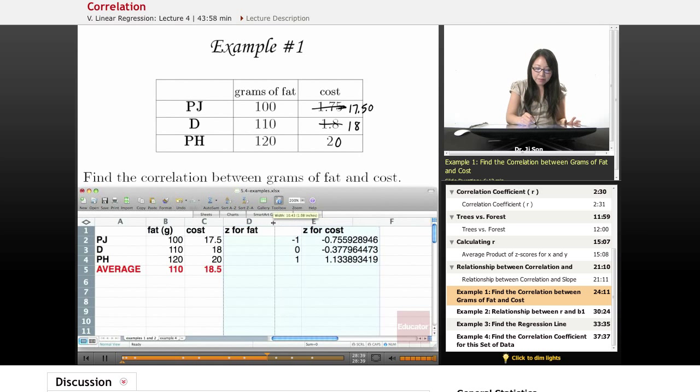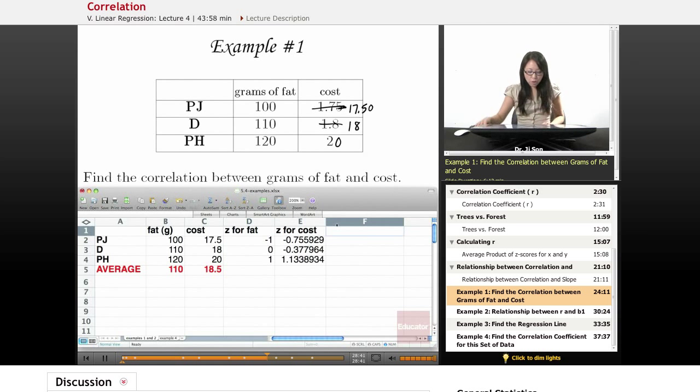So now that we have these individual Z-scores, now we need to get the Z-scores for fat multiplied by the Z-score for cost. And that's real easy: this times this for every single data point or case that we have. And we have three cases here, the three different brands of pizza.